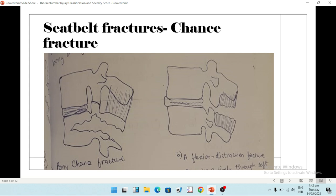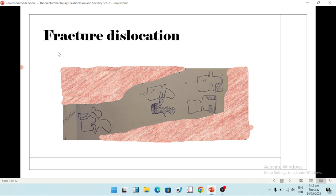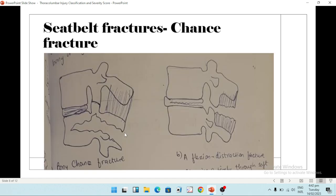Now we come to the seat belt fractures, also called the chance fracture. Basically, to be honest, the bony chance fracture is the horizontal fracture at one level purely through the bone, splitting the spinous process, the laminae, the pedicles, and the body. This is a chance fracture in which there is tearing of the bones in a single line. The other type is a flexion-distraction type of fracture which occurs through the soft tissues. It is also a horizontal fracture, but it will tear the ligaments.